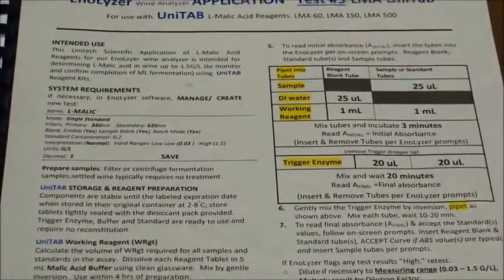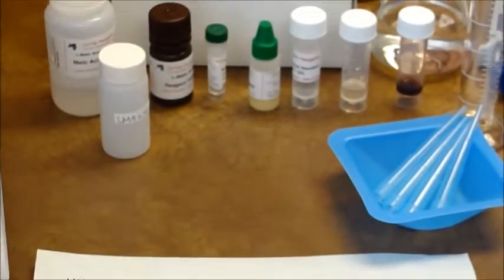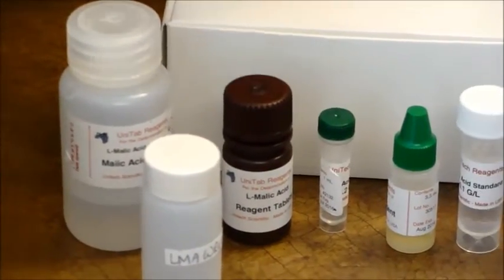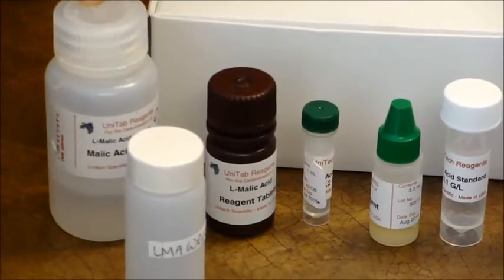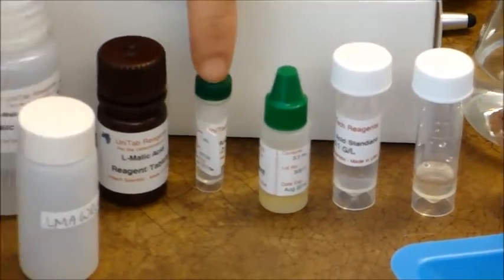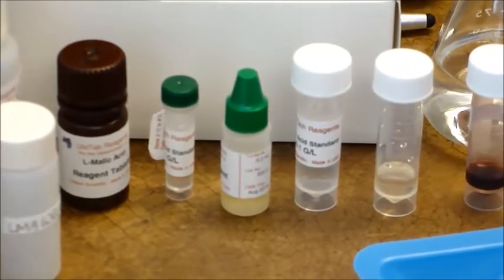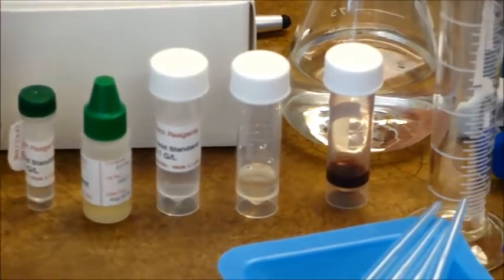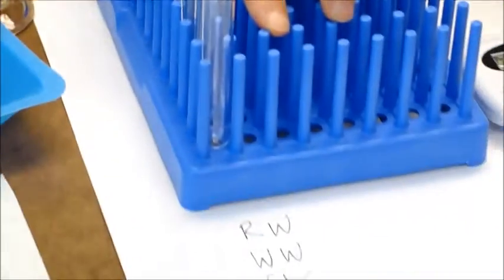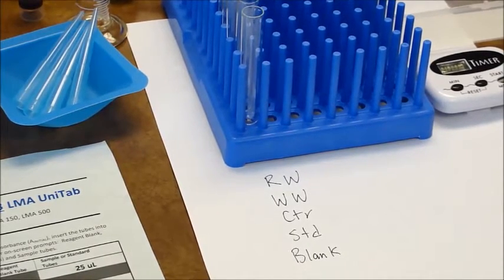The second step is to prepare the malic acid working reagent. The malic acid Unitab kit contains reagent tablets, malic acid buffer, the trigger enzyme (or start enzyme), and the 0.2 g/L standard. We're going to plan enough working reagent to test five tubes. We have a map of the tubes showing the location of the blank, the standard, our control (which will be the 0.1 g/L standard), the white wine, and the red wine.